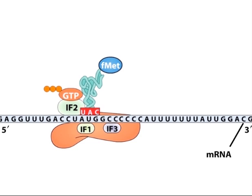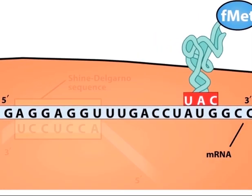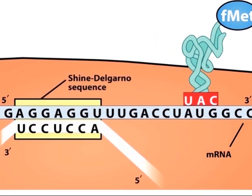Initiation codons in bacterial mRNAs are preceded by a specific sequence called a Shine-Delgarno sequence that aligns the mRNA on the ribosome for translation. The Shine-Delgarno sequence forms base pairs with a complementary sequence near the 3' end of the ribosome 16S rRNA.